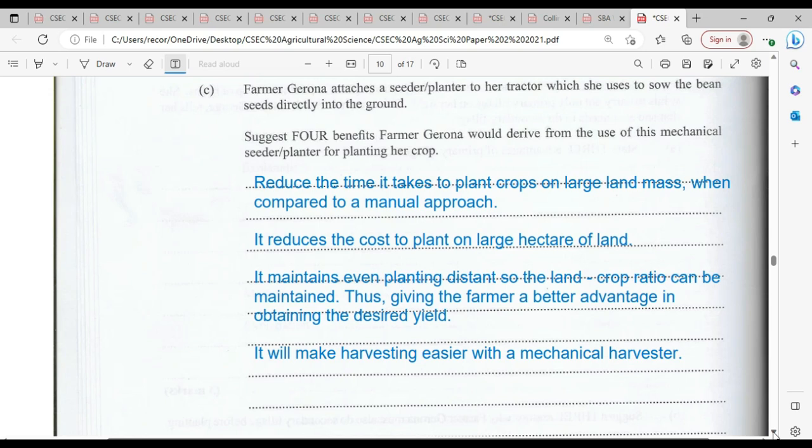Farmer Girona attaches a seeder/planter to a tractor, which she uses to sow bean seeds directly into the ground. State four benefits farmer Girona would derive from the use of this mechanical seeder/planter for planting her crops. The benefits are going to be common to all forms of mechanization.